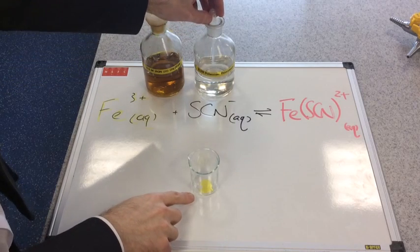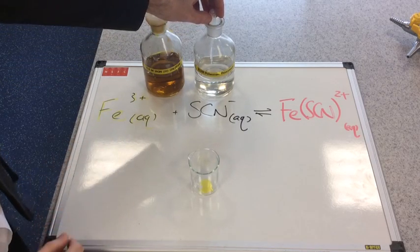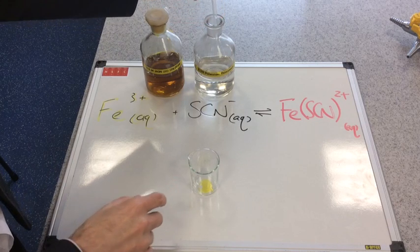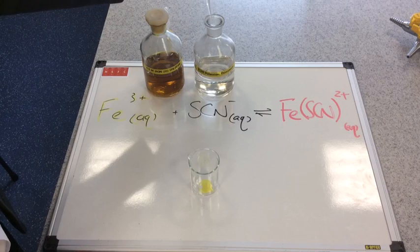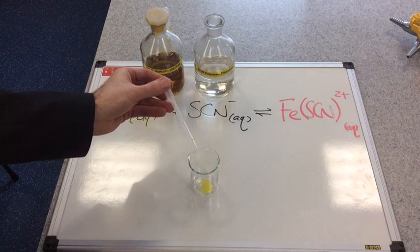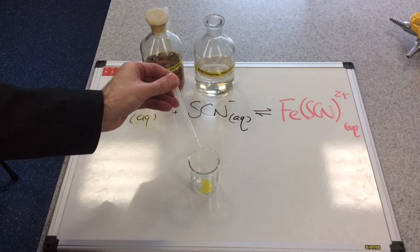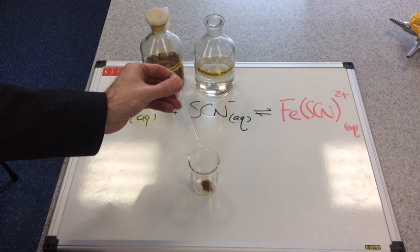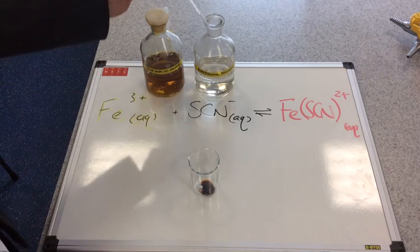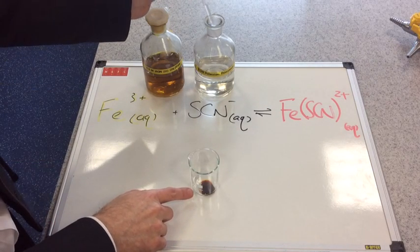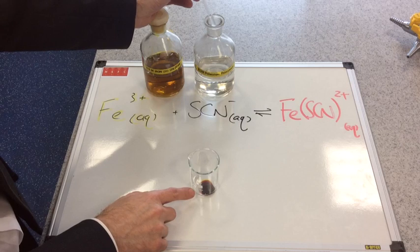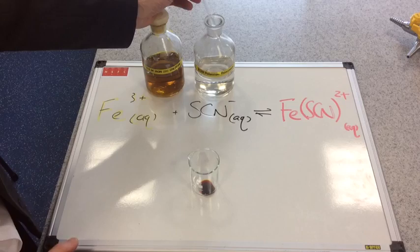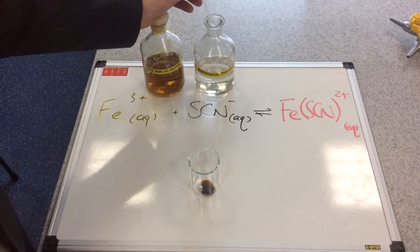You can see from the beaker I've already introduced a small amount of iron 3 plus ions, you can just see the yellow at the bottom of the beaker, and to this I'm going to add a few drops of the thiocyanate ion. It's going that deep red color so I'll put about five or six drops in there and I'm going to top this up with distilled water and then split this solution into five equal parts.